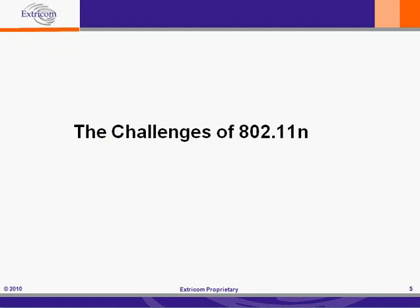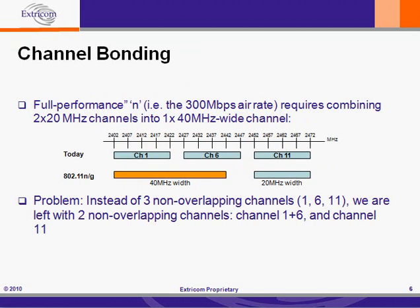Now let's talk about the challenges of 802.11n. One of the main issues in getting the most out of 802.11n is channel bonding, and it's also one of the main challenges. While channel bonding brings tremendous performance benefits, it also brings some implementation challenges. Full performance N — i.e. the 300 Mbps error rate — requires combining two 20 MHz channels into one 40 MHz wide channel. That's what channel bonding is.